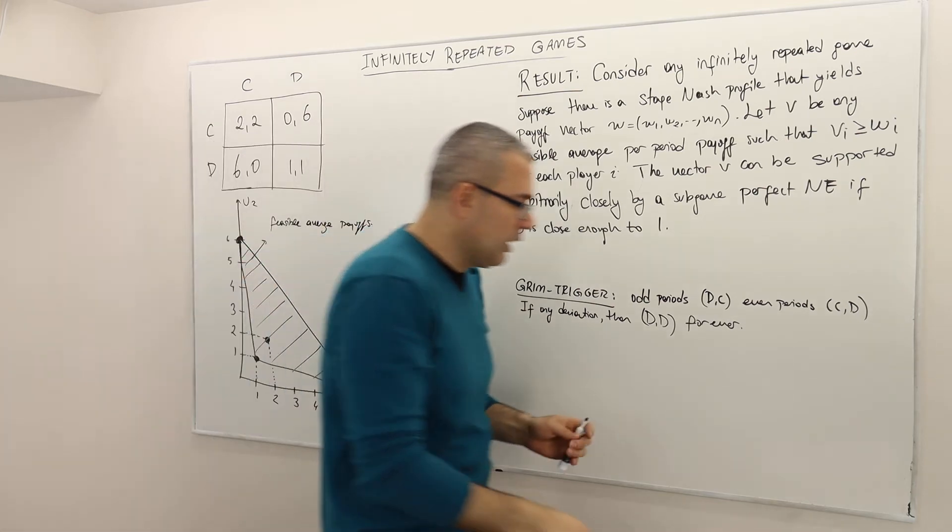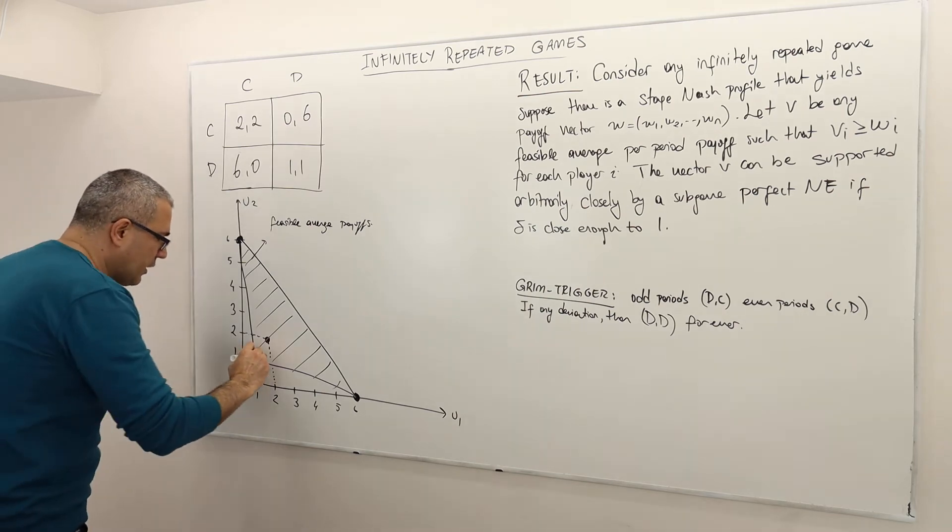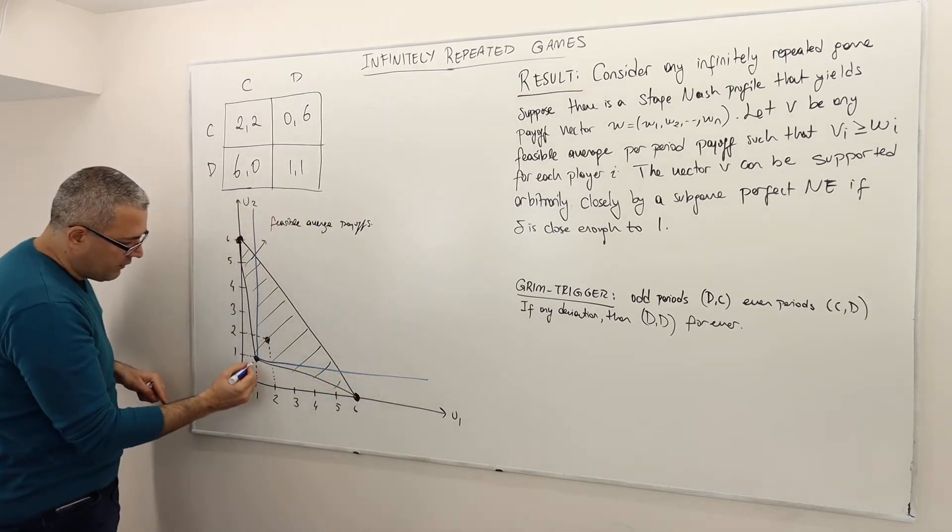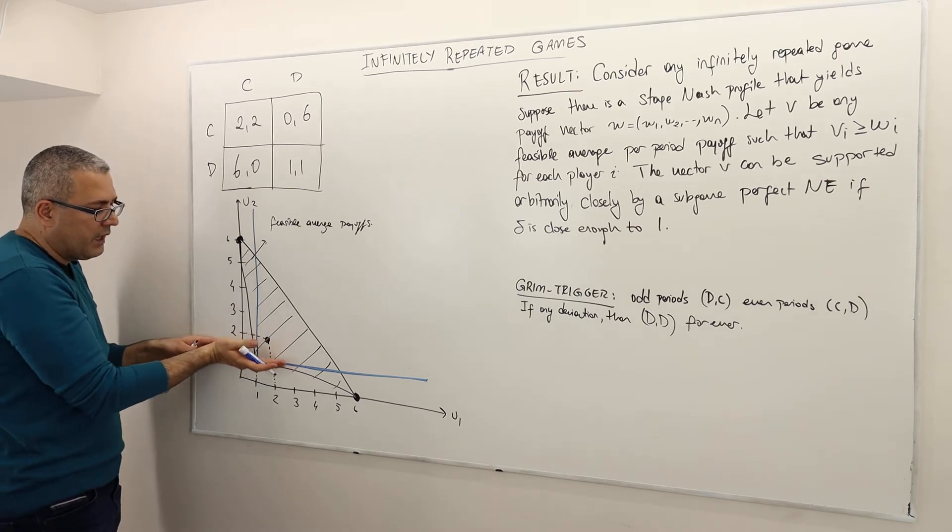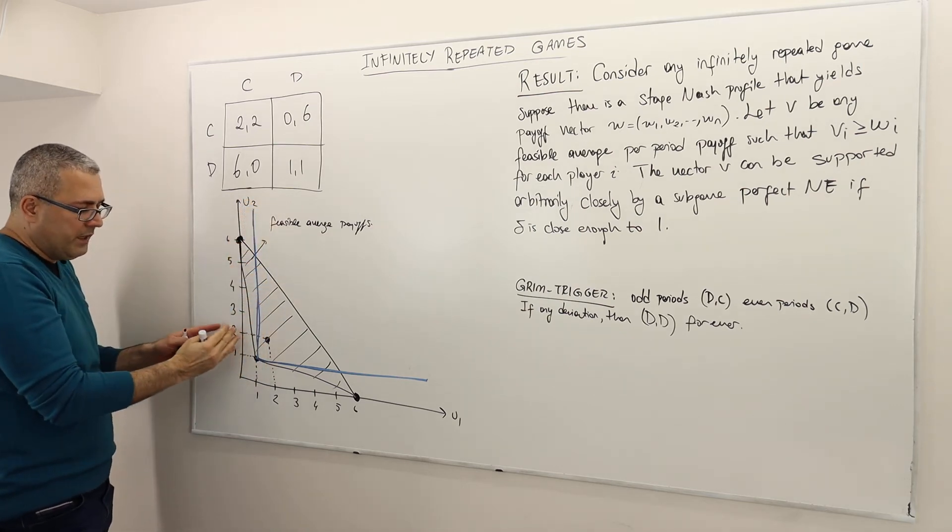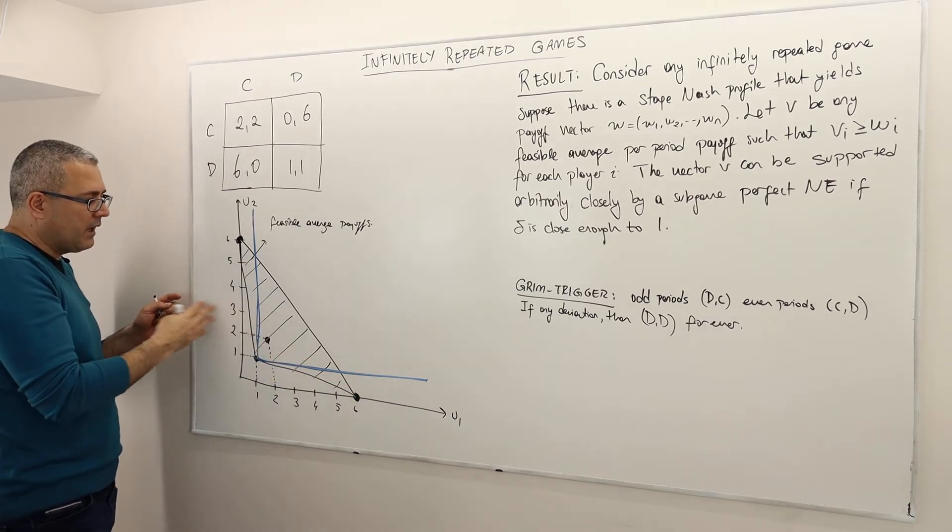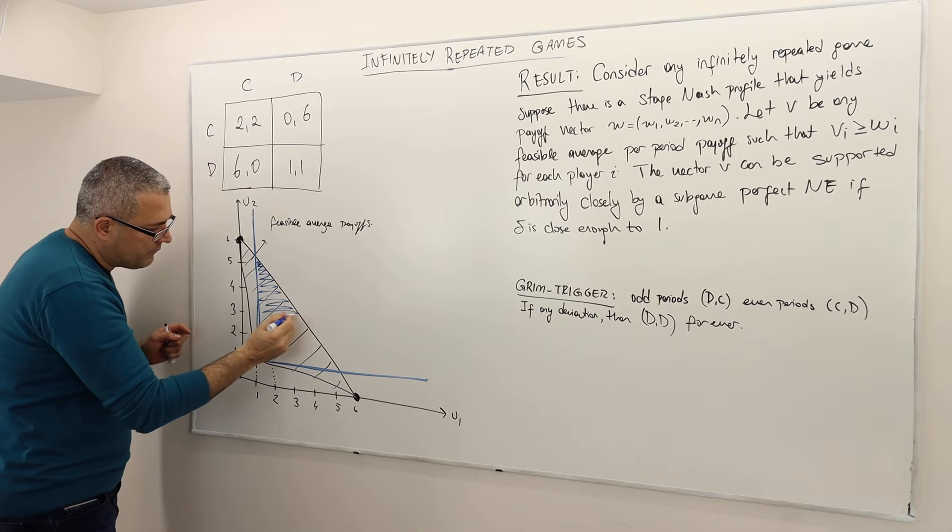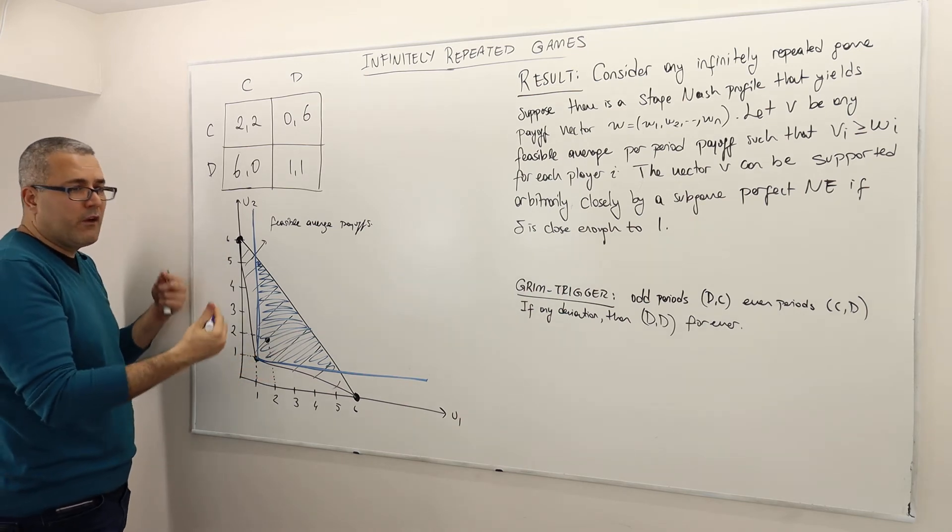This theorem says, hey look, look at the Nash equilibrium payoff vector, which is 1,1, right? So therefore, consider all the vectors where players get more than 1. So this is basically the 1 line for player 2. Above this, player 2 gets higher than 1. And this is the 1 line for player 1, meaning to the right of this, player 1 gets higher than payoff 1. And on the left side, player 1 gets lower than payoff 1. So therefore, all these points are not only feasible but also give both player 1 and 2 payoff more than 1.